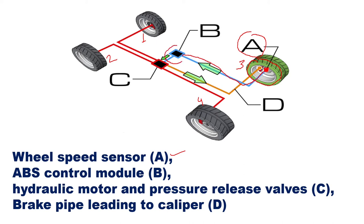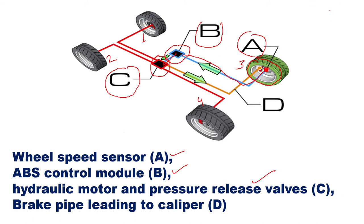That wheel speed sensor will give information to the unit called the ABS control module, marked as B. This is an electronic module which will get the information from the wheel sensor about the wheel status. Then that module will give the command to the hydraulic motor and pressure release valves, marked as C, which will make the brakes apply. There is then a brake pipe leading from C to D.